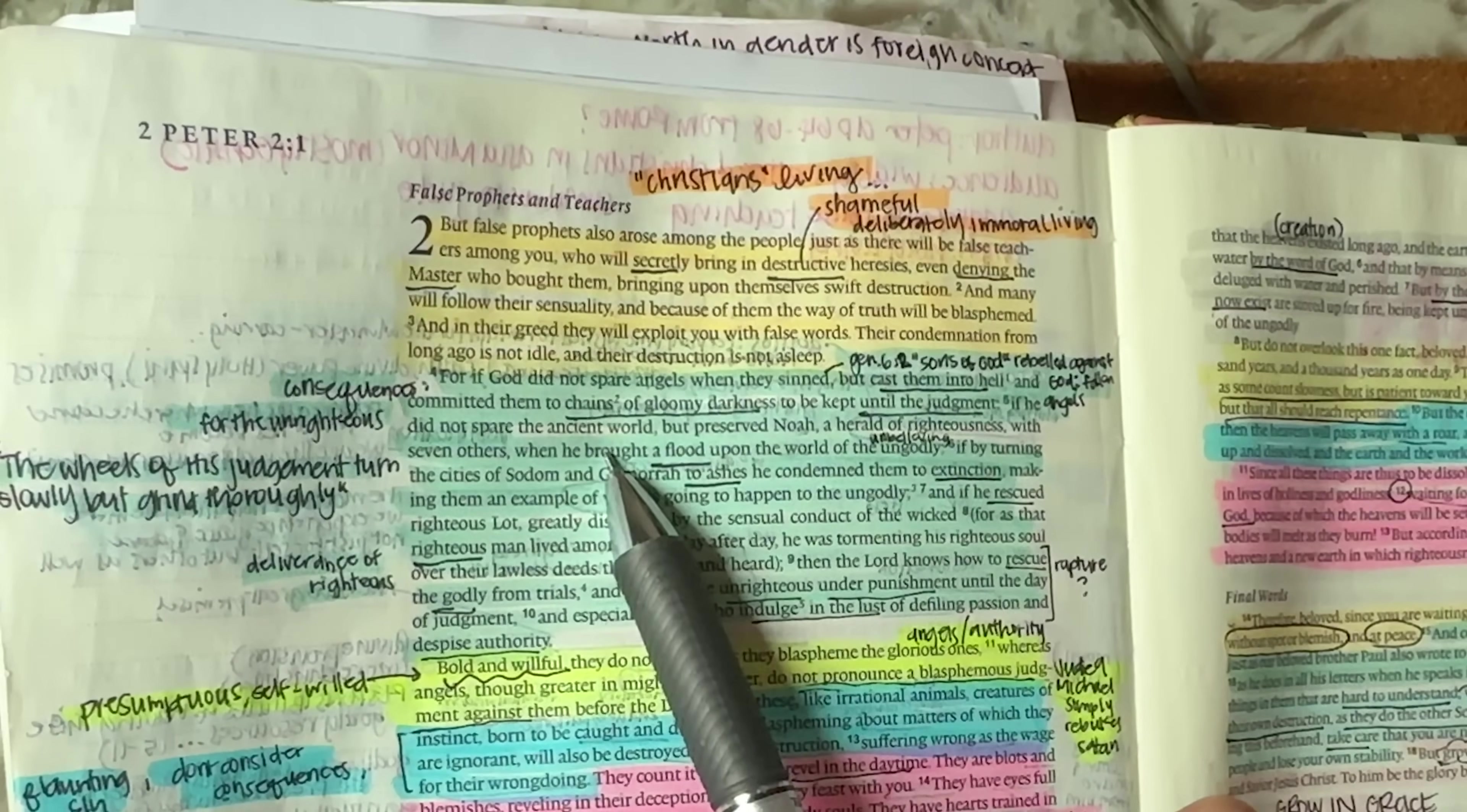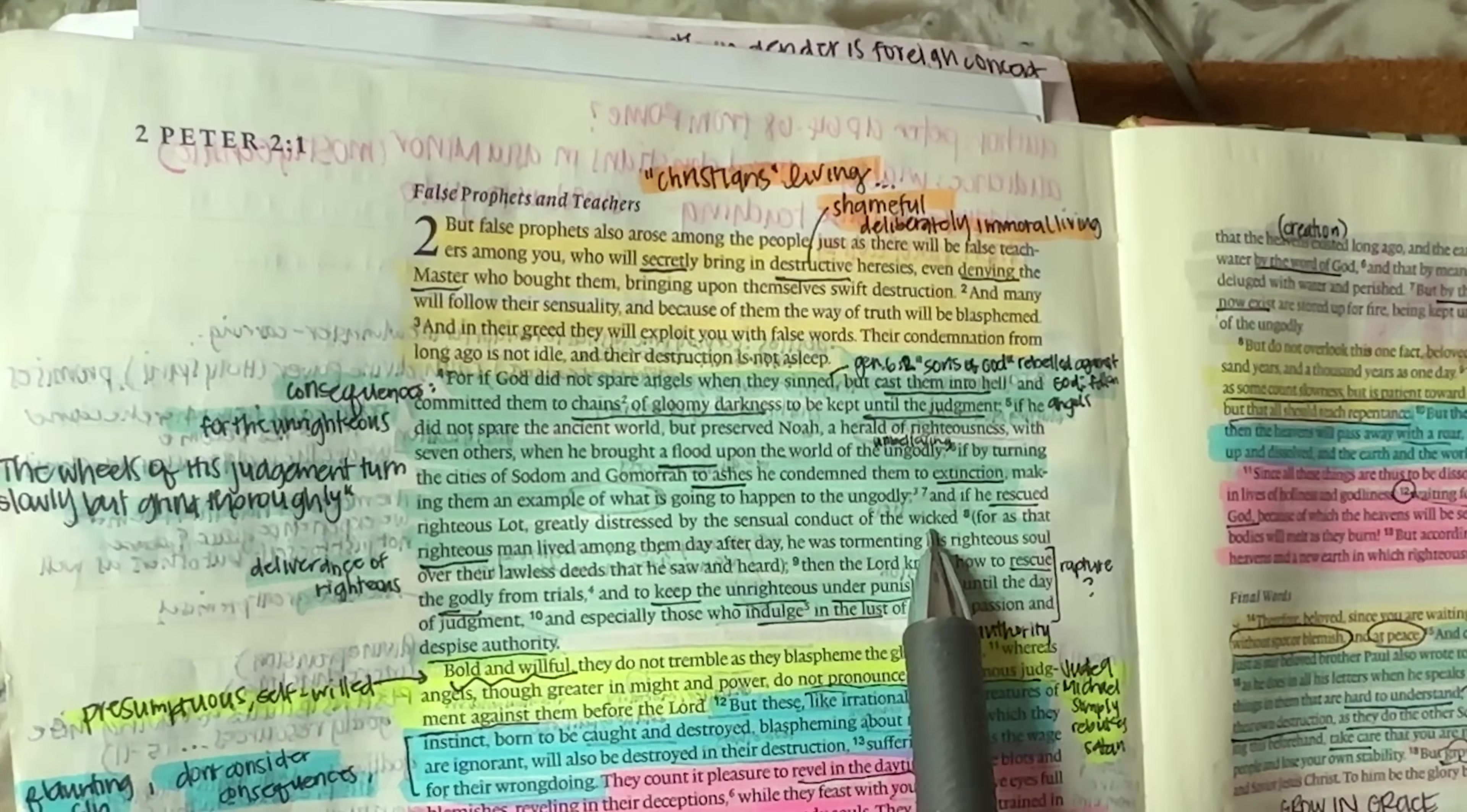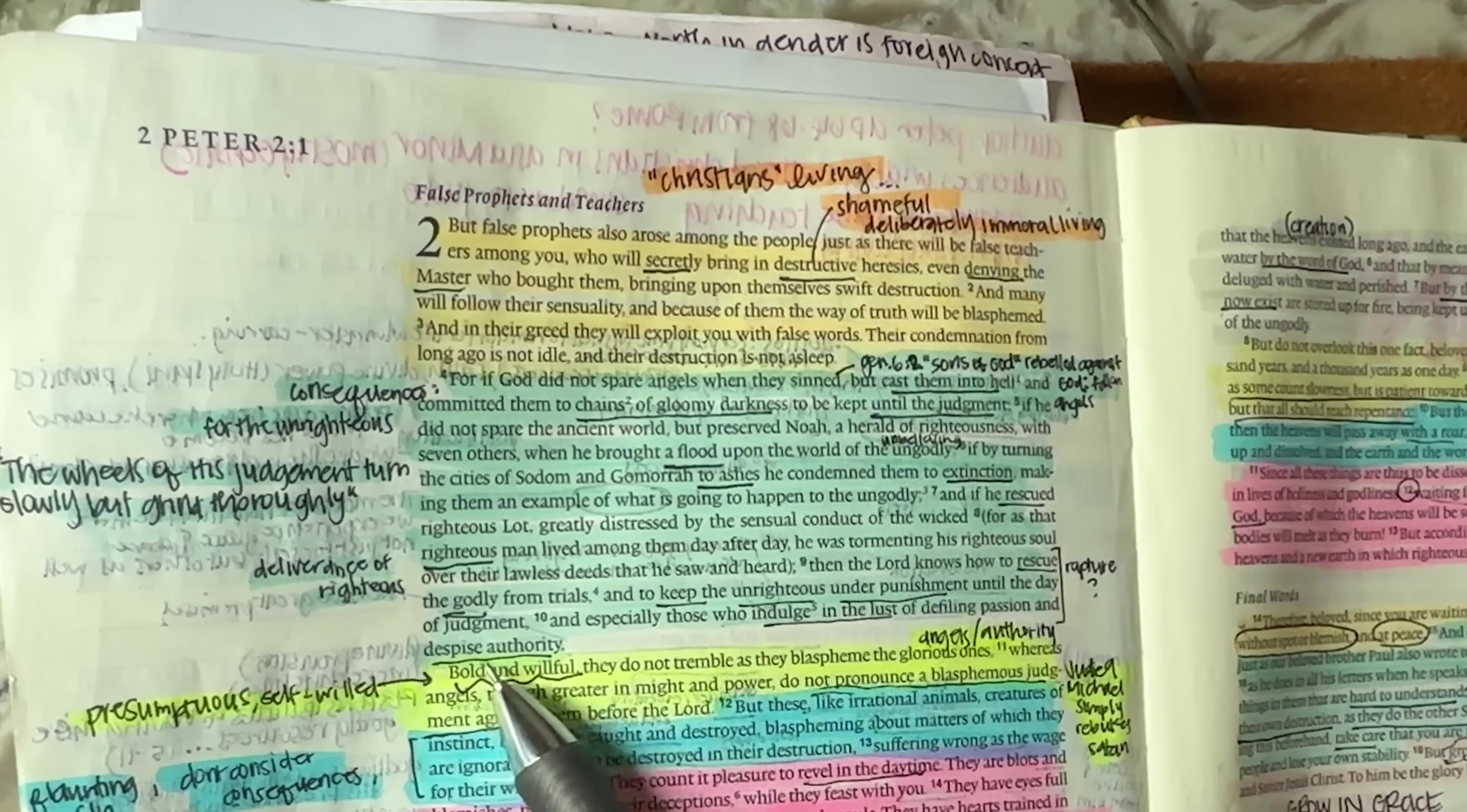If he didn't spare the ancient world, but preserve Noah, a herald of righteousness with seven others, when he brought a flood upon the world of the ungodly, if by turning the cities of Sodom and Gomorrah to ashes, he condemned them to extinction, making them an example of what is going to happen to the ungodly. And if he rescued righteous lot, greatly distressed by the sensual conduct of the wicked, for as the righteous man lived among them day after day, he was tormented his righteous soul over their lawless deeds that he saw and heard. Then the Lord knows how to rescue the godly from trials and to keep the unrighteous under punishment until the day of judgment.